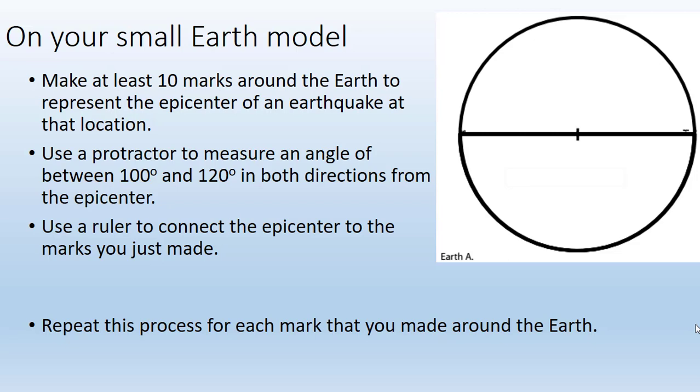You have a new paper with a small Earth model on it. Make at least 10 marks around the Earth to represent the epicenter of an earthquake at that location. Then use a protractor to measure an angle between 100 and 120 degrees in both directions from the epicenter. Use a ruler to connect the epicenter to the marks you just made, and repeat this for every mark that you made around the Earth.